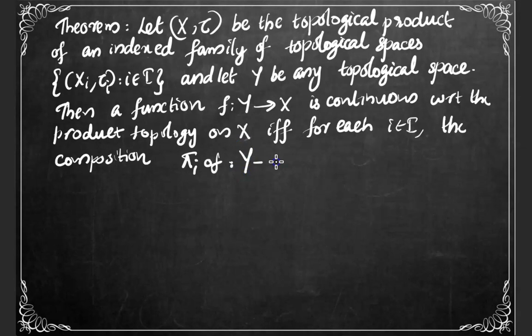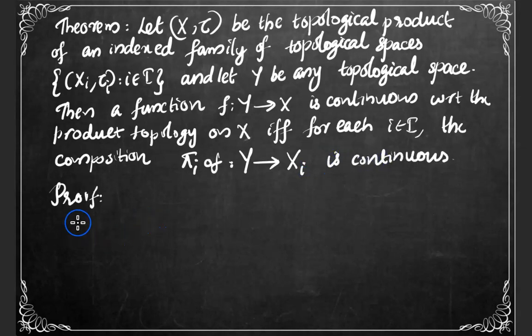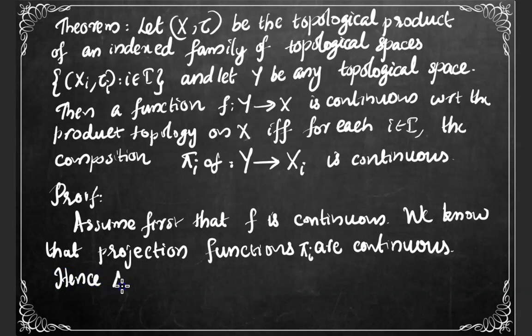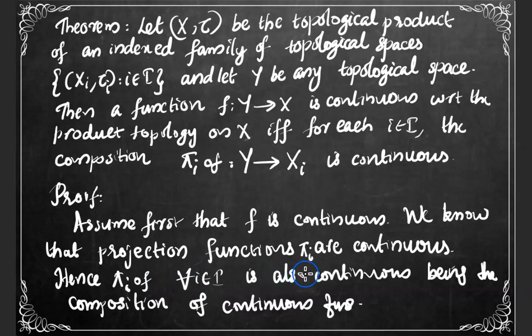For the proof, let us first assume that f is continuous. We know that projection functions are all continuous, since the product topology on the Cartesian product of all the spaces Xᵢ is defined in such a way that the product topology is the smallest topology which makes each projection function continuous. So f is continuous and the projection functions πᵢ are also continuous; hence the composition πᵢ∘f is also continuous, being the composition of continuous functions.